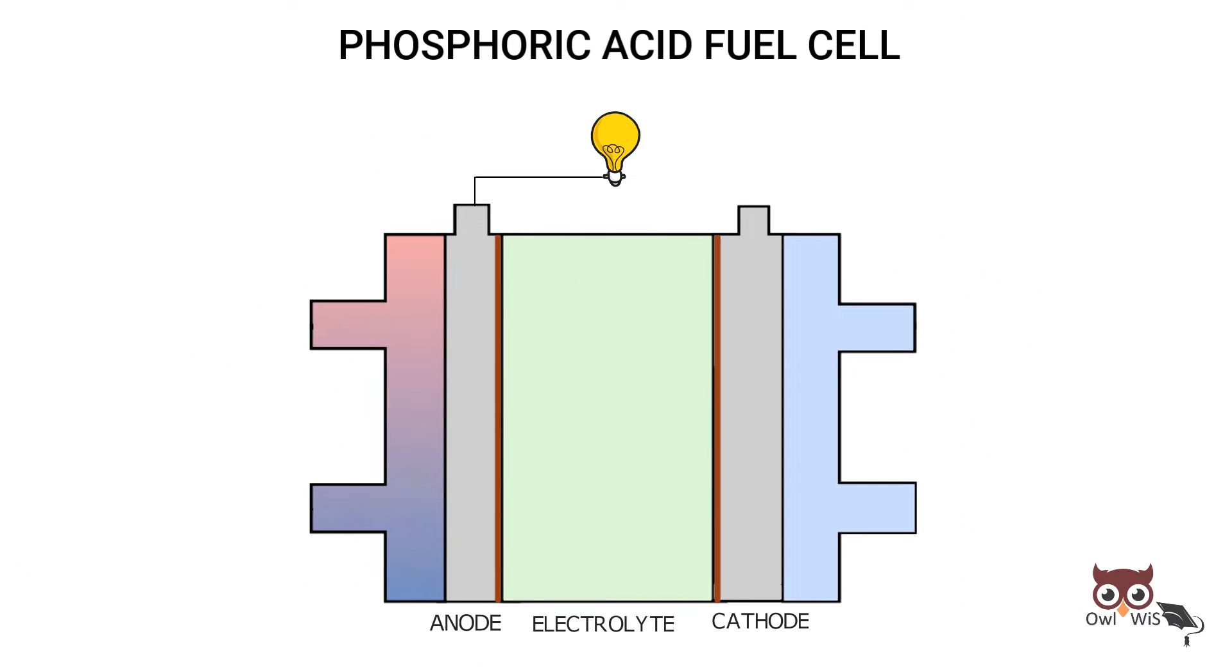At the fuel electrode anode, pure hydrogen is supplied and air is supplied at the air electrode cathode. Hydrogen splits at the platinum catalyst to become hydrogen ions, protons and electrons. The hydrogen ions migrate towards the air electrode through the electrolyte.